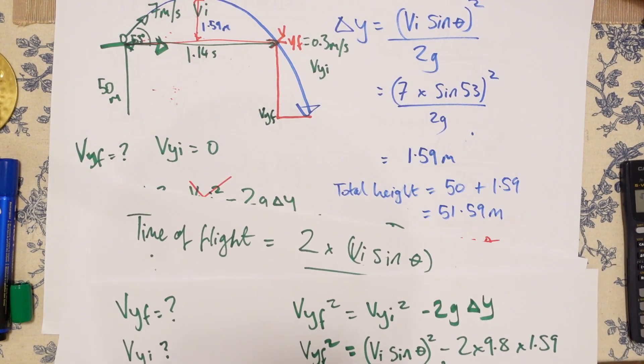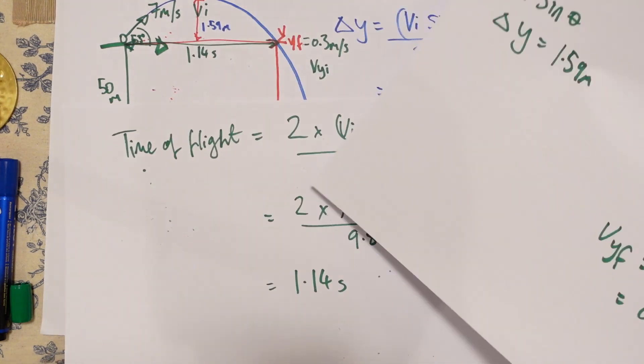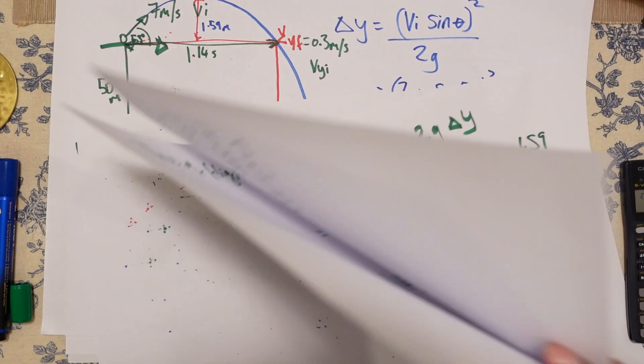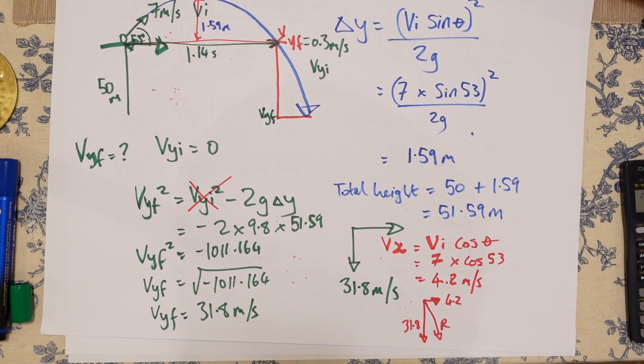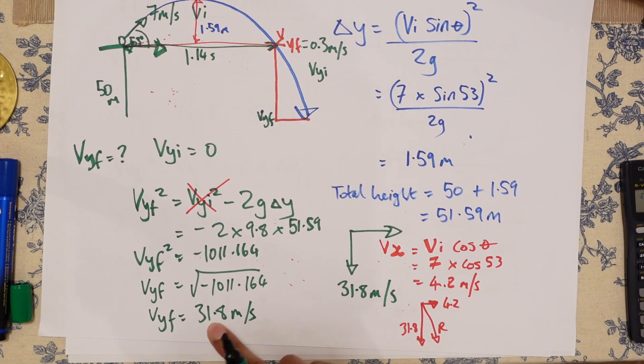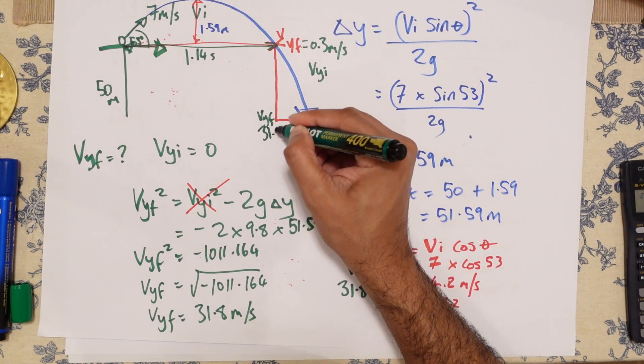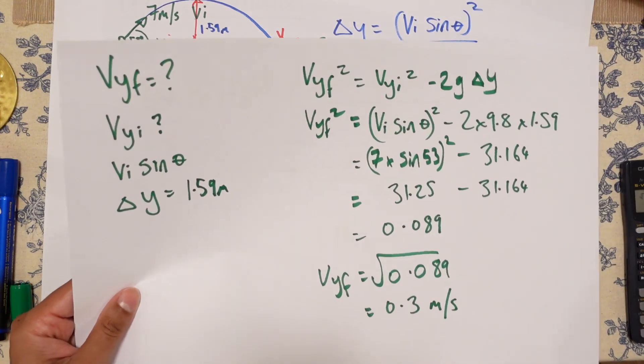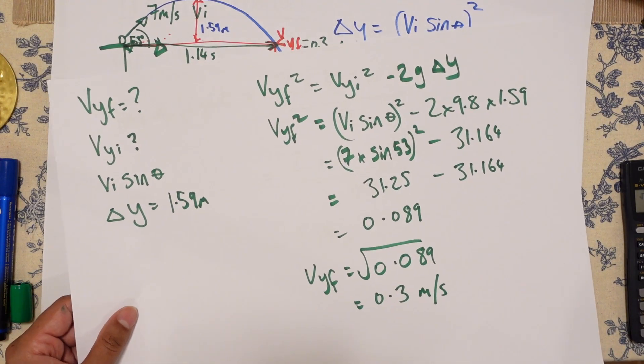Because the VYF down there, we actually worked it out a little bit earlier. So where was that? That was this, 31.8 meters per second.